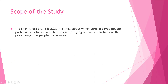Next is the scope of the study — the area in which it is going to have application. This will help us to understand brand loyalty, to know which purchase type people prefer most, to find out the reason for buying specific products, and to find out the price range or discount that people prefer the most. That becomes the scope of the study.